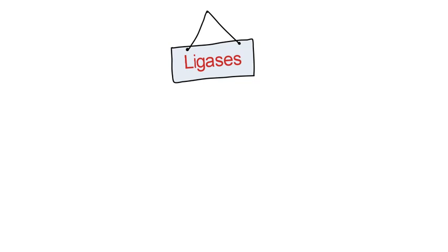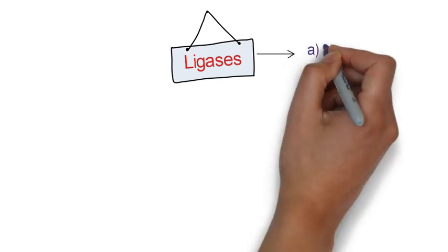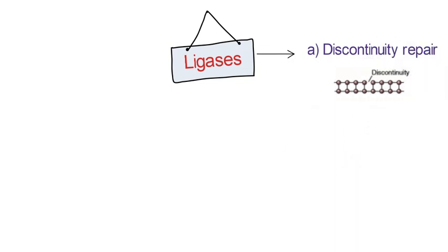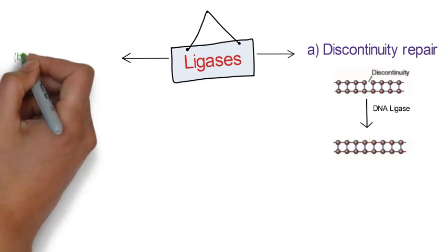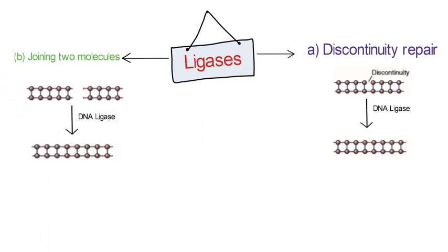Let's study ligases. In the cell, the function of DNA ligase is to repair single-stranded breaks called discontinuities that arise in double-stranded DNA molecules during DNA replication. DNA ligases from most organisms can also join together two individual fragments of double-stranded DNA. The two reactions can be repair of a discontinuity, a missing phosphodiester bond in one strand of a double-stranded molecule, or joining two molecules together.